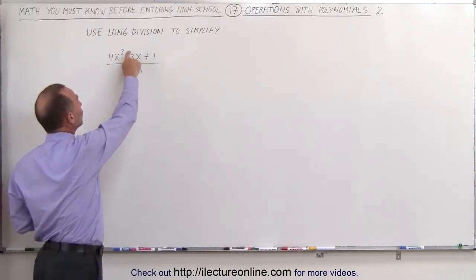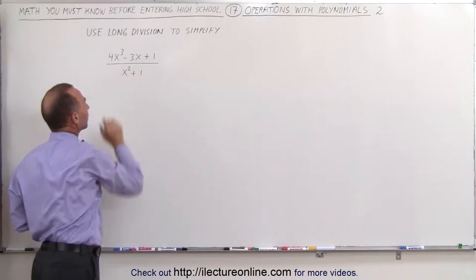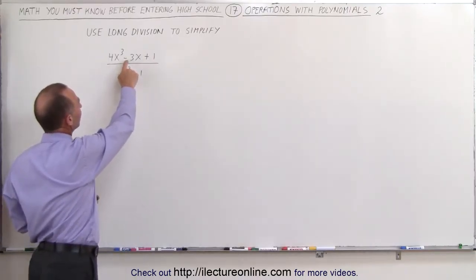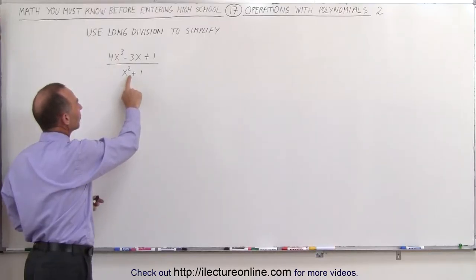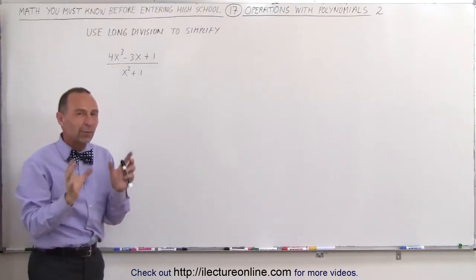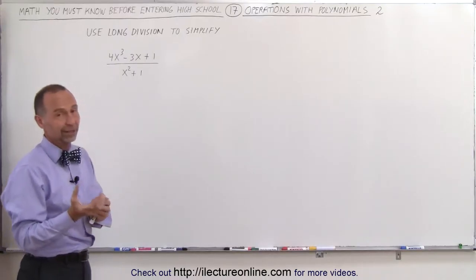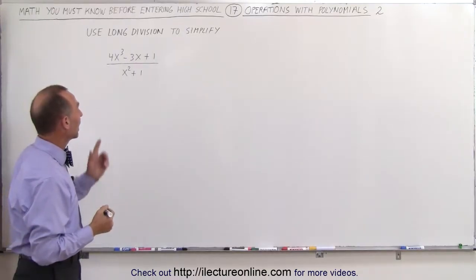We're going to take the polynomial in the numerator and divide it by the polynomial in the denominator. But notice in the numerator, there's an x-squared term missing, and in the denominator, there's an x to the first power missing. So when we set up the long division, we want to make sure we include those missing terms by putting a zero in front of them. All right.